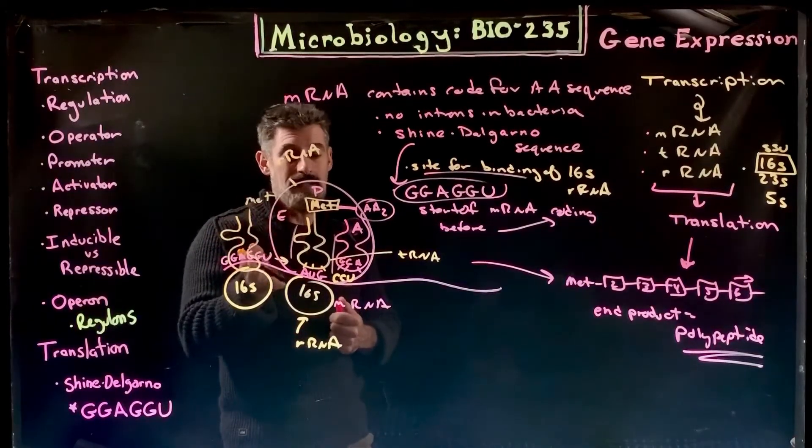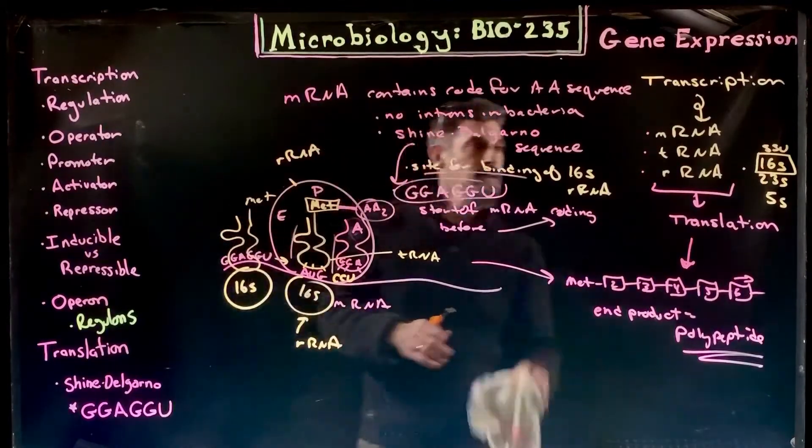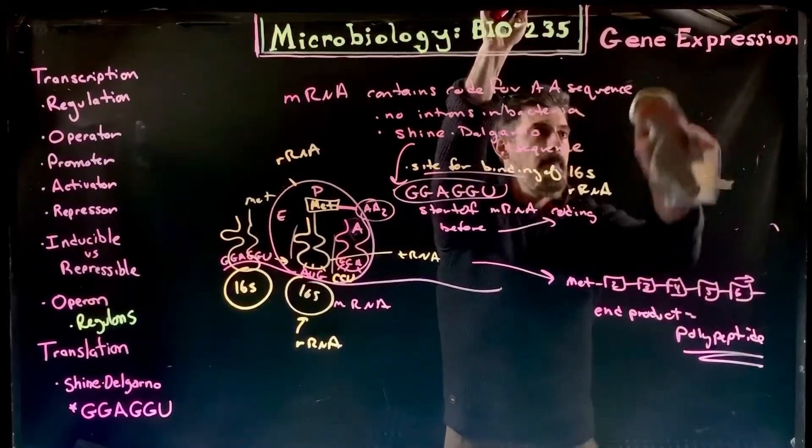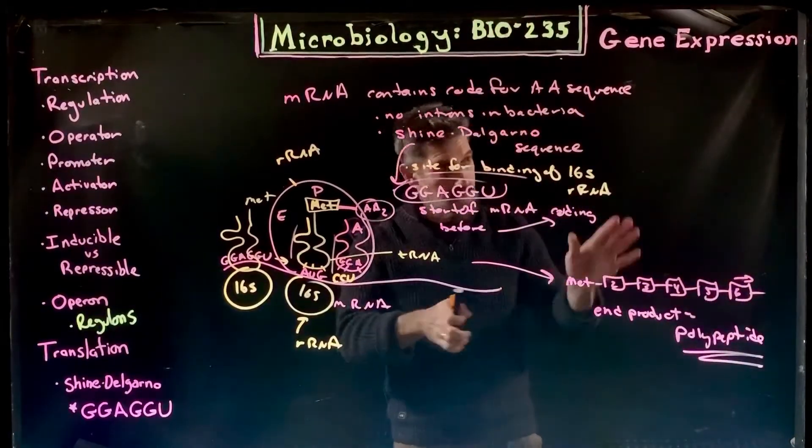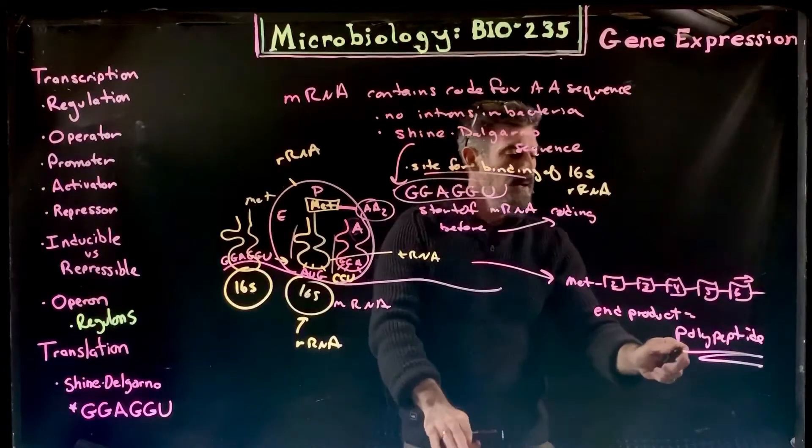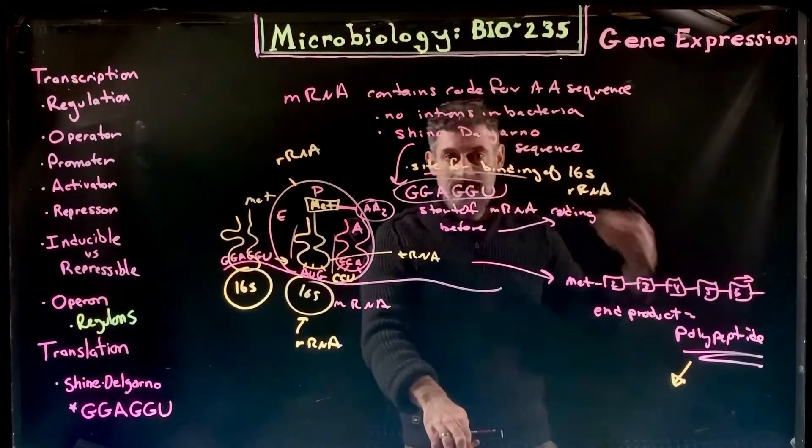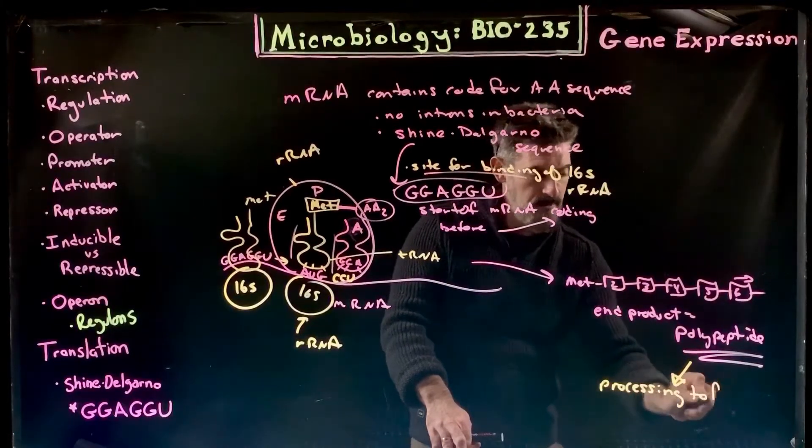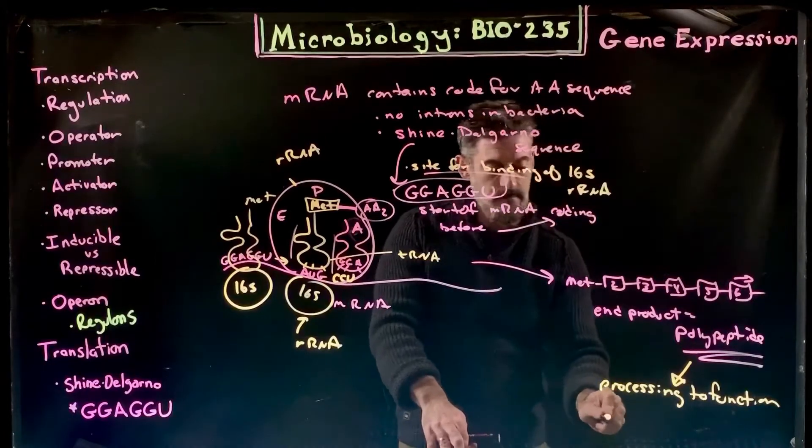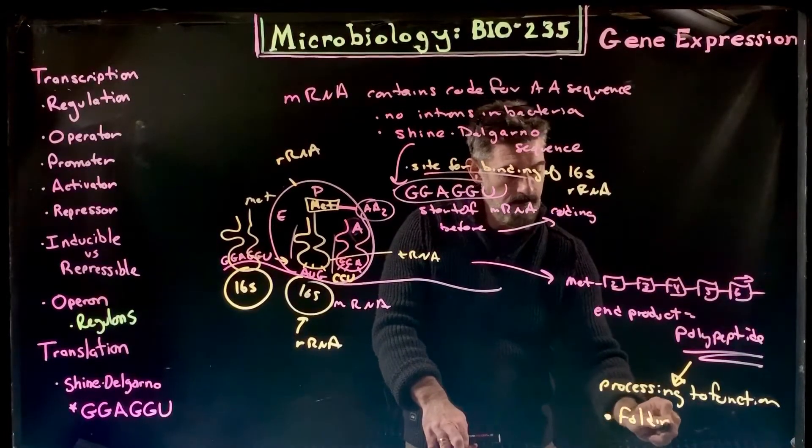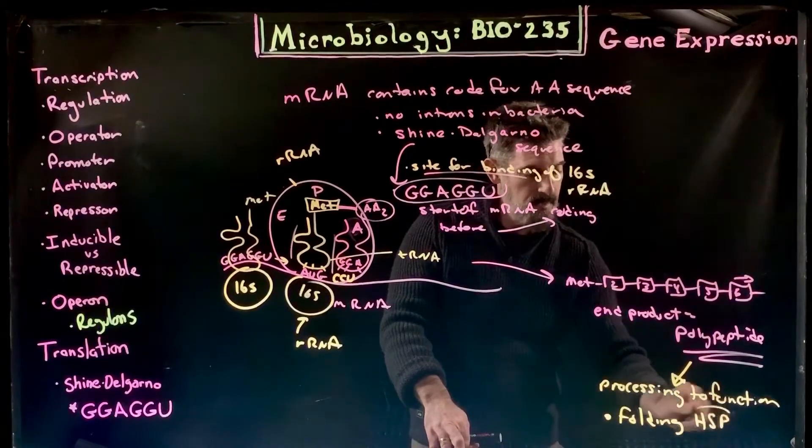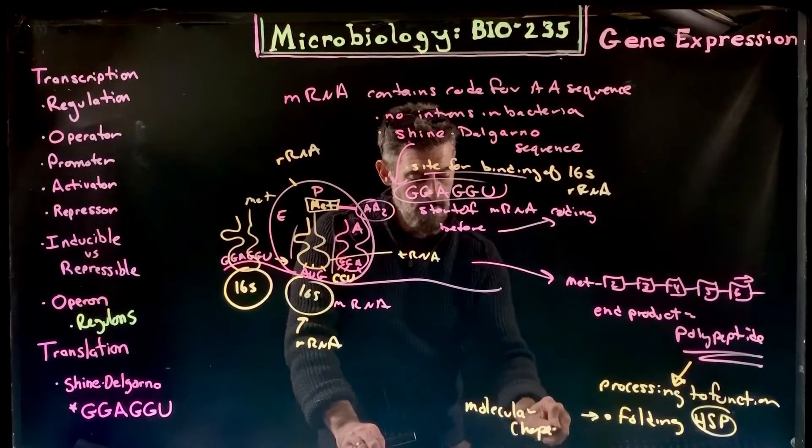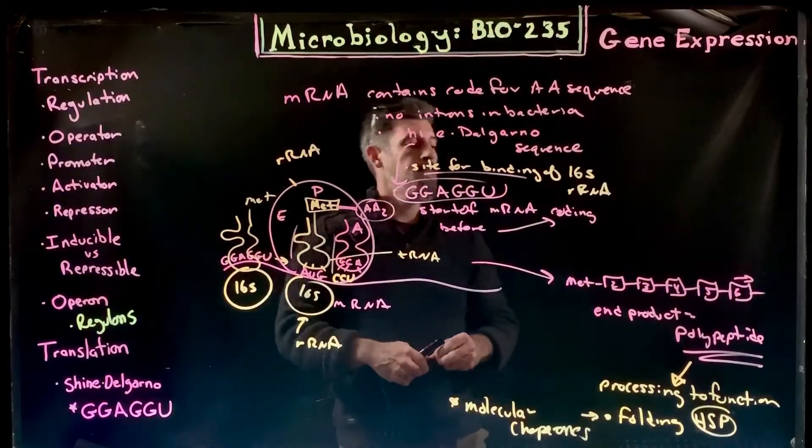There are different places where this can be regulated, so our regulation of processes for gene expression. This polypeptide is unlikely to be immediately functional, so it usually requires processing to function. One of those types of processing are the folding by groups of proteins called HSPs, also known as molecular chaperones.